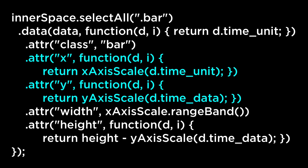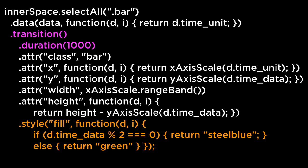We update the X and Y values to be the timeUnit and timeData as scaled through the respective scaling functions. The width is still the X axis ordinal scale range band. The height is the chart height minus the Y scaled function of the timeData, to ensure the rectangle starts from the zero point on the chart. To make it more fun, we will have the redraw function use a D3 transition over one second, making the rectangle movement smoother.